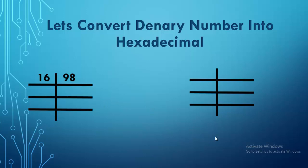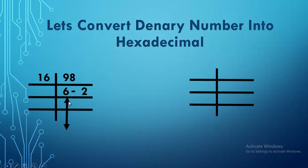To find the hexadecimal of this denary number, we need to divide by base 16. 16 times 6 is 96, and 16 times 7 is 112 which is greater, so we go for 6. 96 from 98 gives remainder 2. We cannot further divide 6 by 16 because 6 is less than 16. So we got the value 6 and 2 — reading from left to right: 98 in denary equals 62 in hexadecimal.